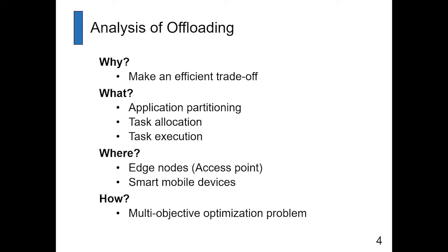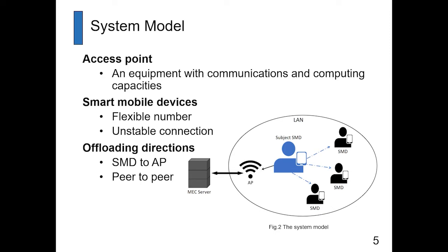Next, I want to analyze offloading from the perspectives of why, what, where, and how. We do offloading because it can make an efficient trade-off. Offloading involves application partitioning, task allocation, and task execution. We can do offloading everywhere — at edge nodes and smart mobile devices. How to do offloading is a multi-objective optimization problem that we address in our research.